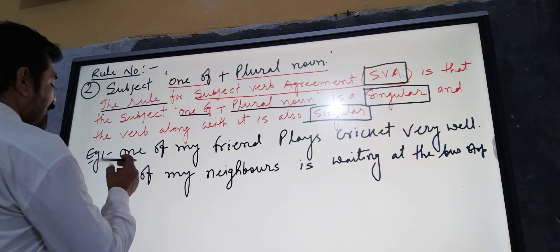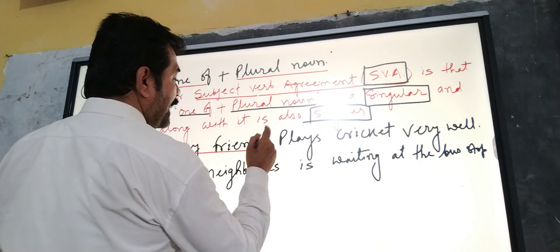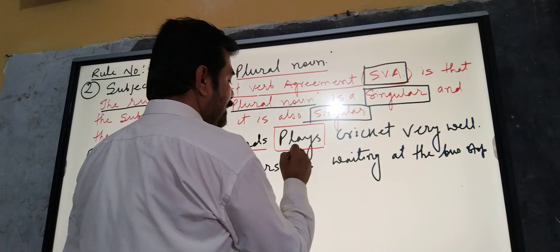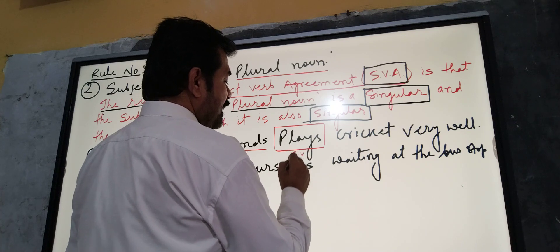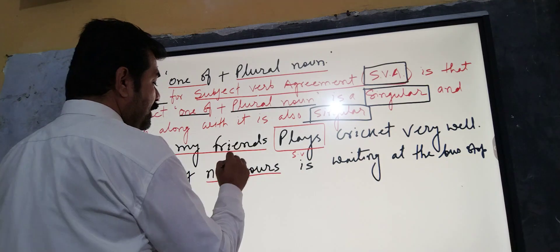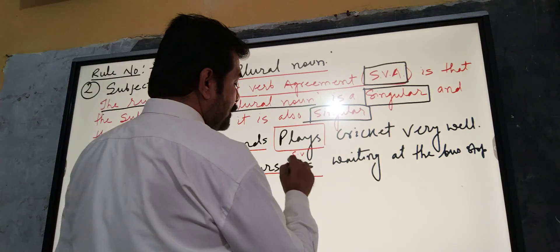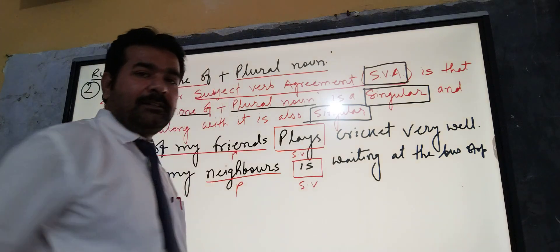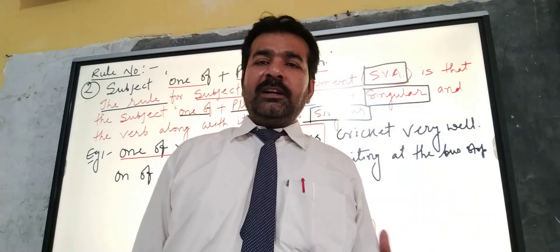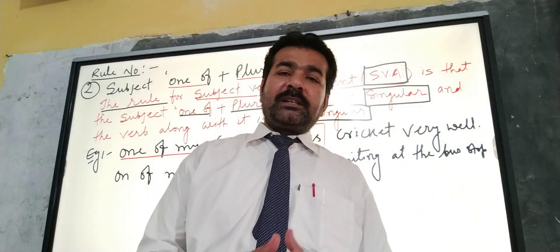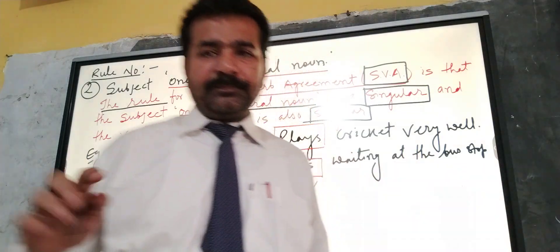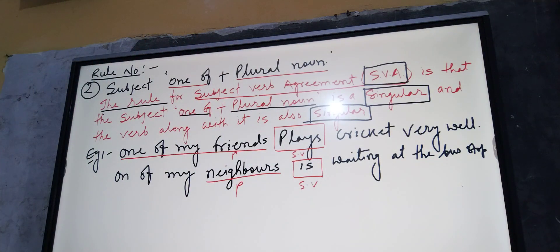For example: 'One of my friends' — the verb here will be singular. 'One of my neighbors' — this is also a plural noun, but the verb that goes with it will be singular. So the first law is clear: if 'one of' is followed by any plural noun, the verb will always be singular. Now let's look at the third law.